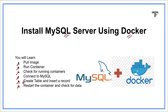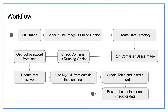Let's move ahead and see the workflow. In the first step, we'll be pulling a MySQL server image. In the second step, we'll check that the image is pulled or not. Thirdly, we'll create a data directory in which we'll keep all the data of MySQL. Then we'll run the container using the image, check that the container is running or not, and get the root password from the logs. Then we'll update the root password as per our requirement. Then we'll configure MySQL so that we'll be able to use it from outside the container. Then we'll create a sample table and insert a sample record in it. Then we'll restart the same container and check that the data is available after restarting or not.